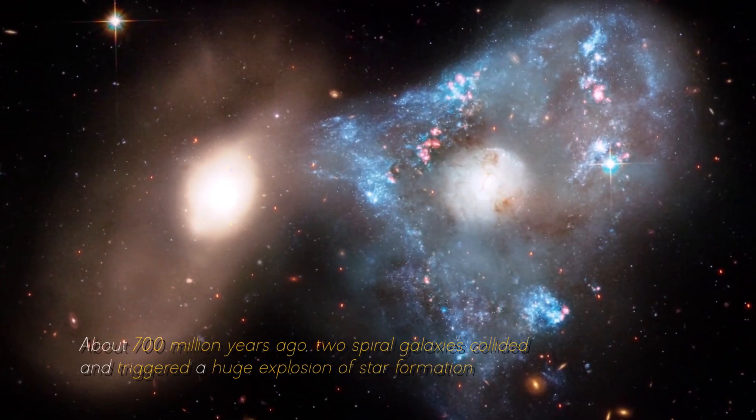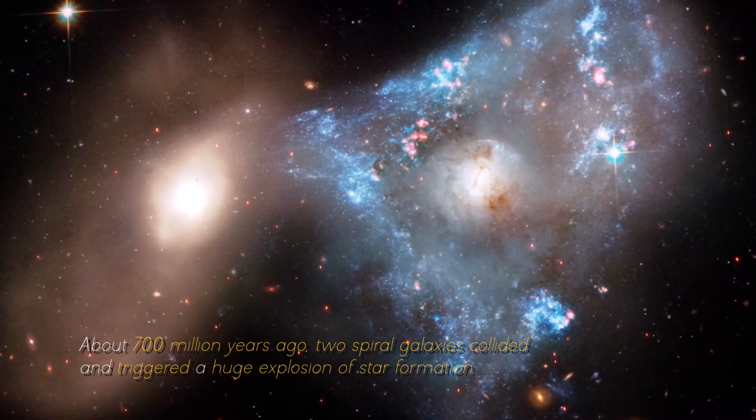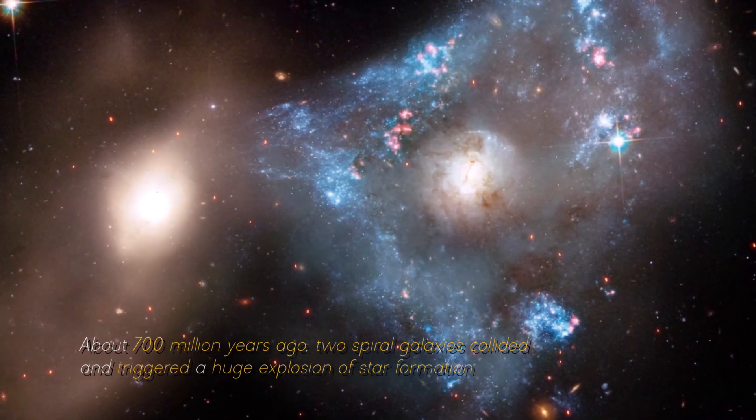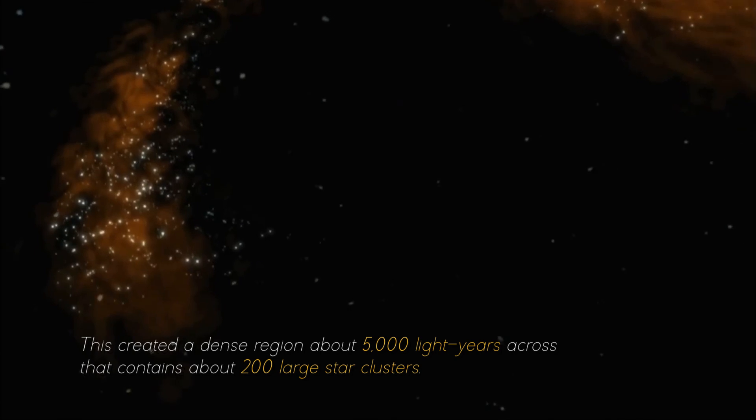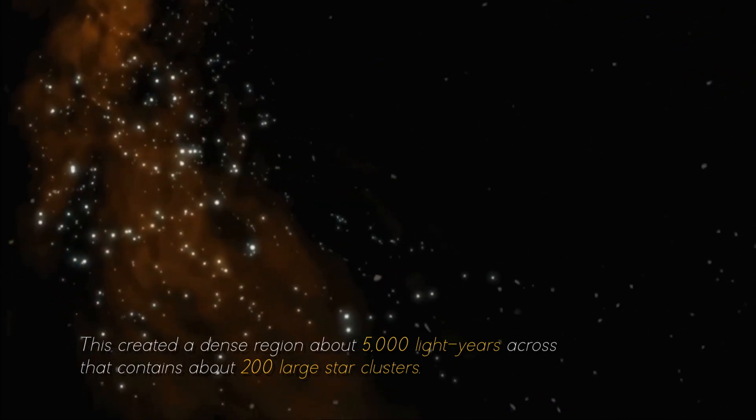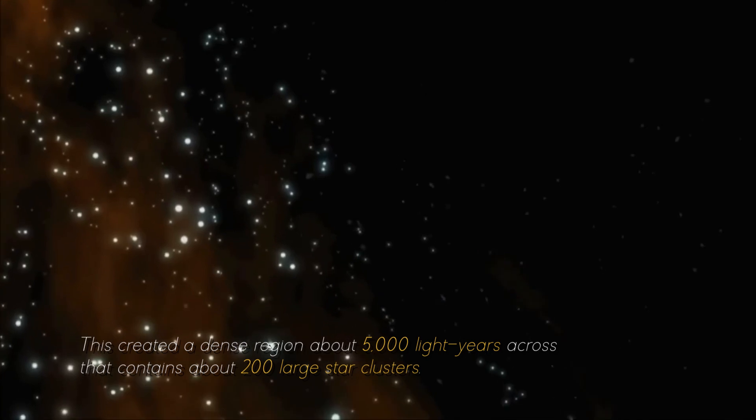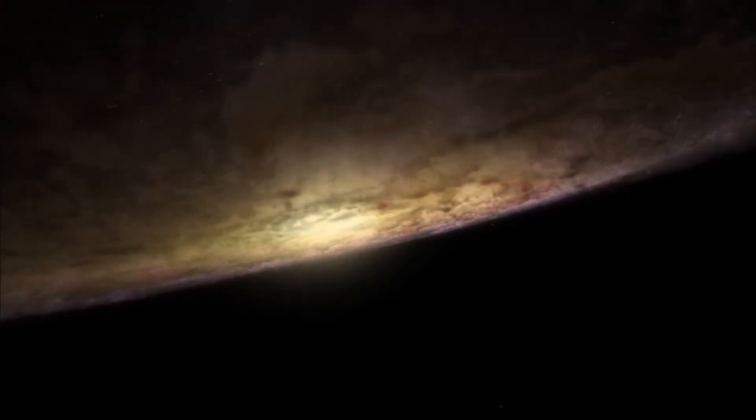About 700 million years ago, two spiral galaxies collided and triggered a huge explosion of star formation. This created a dense region about 5,000 light years across that contains about 200 large star clusters. Surprisingly, this small area contains as much gas as the entire Milky Way.